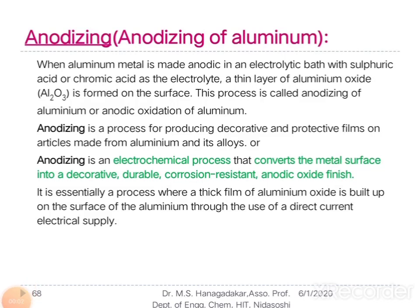Welcome back to the video lecture of Corrosion Science and its Control, Module Number 2. The last part of Corrosion Science and its Control is anodizing, or anodizing of aluminium.